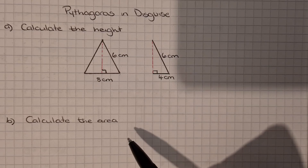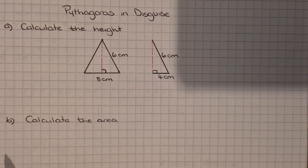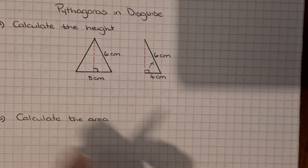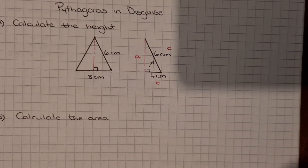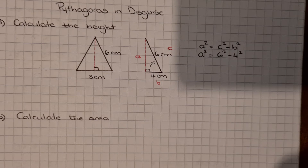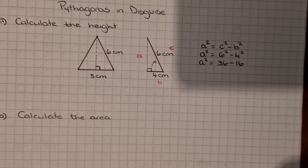Since it's a right angle triangle we can use Pythagoras. We're trying to find one of the smaller sides, because we've got the hypotenuse — that is opposite the right angle. So we label the triangle a, b, and c, then write out our Pythagoras theorem for finding a shorter side: a² = c² − b². Putting in the numbers: 6² − 4², which is 36 − 16.